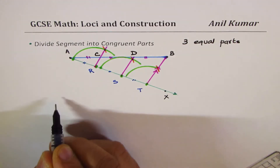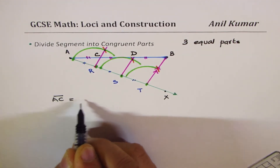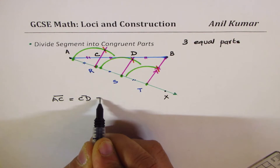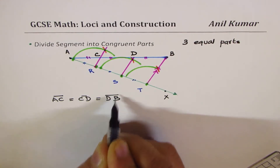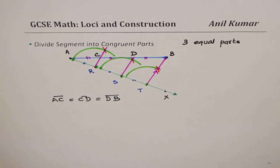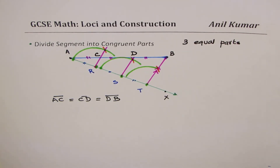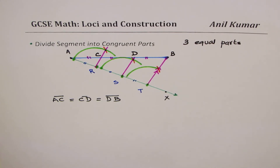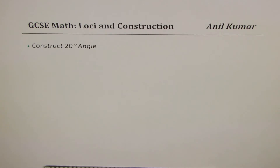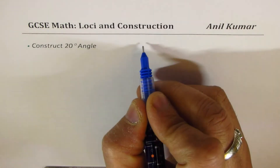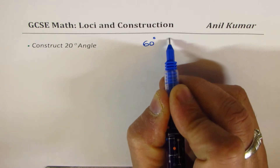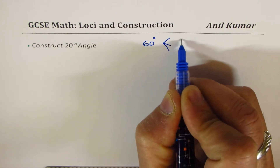We know that segment AC equals CD equals DB — these are formed by similar triangles. That is how you divide a line segment into three equal parts. Now we will see how to construct an angle of 20 degrees. The idea is to first construct a 60 degrees angle and then divide it into three equal parts.